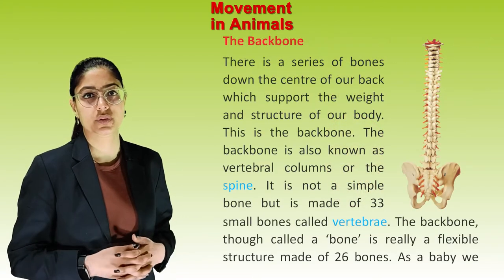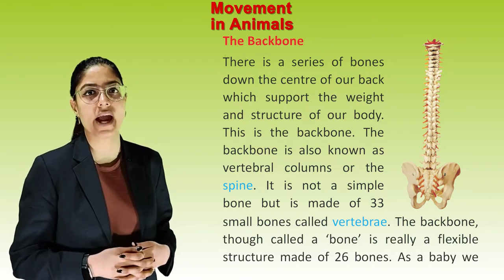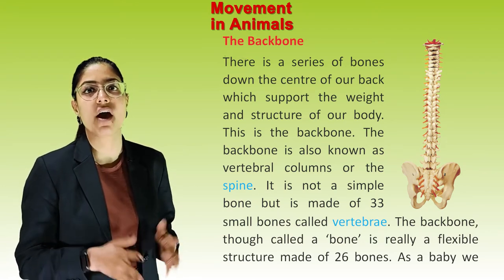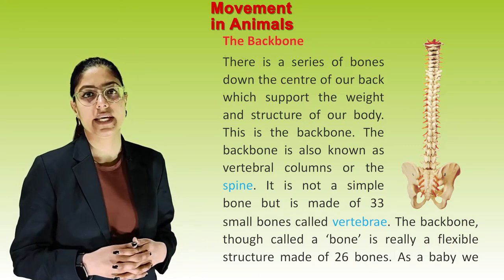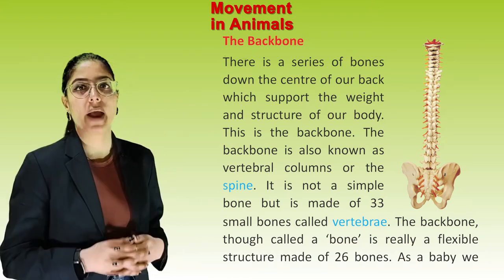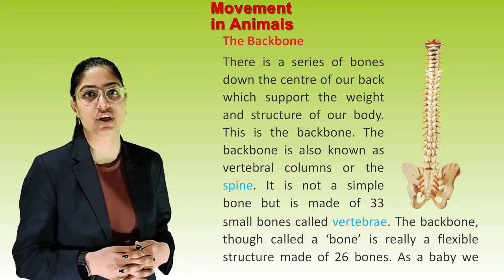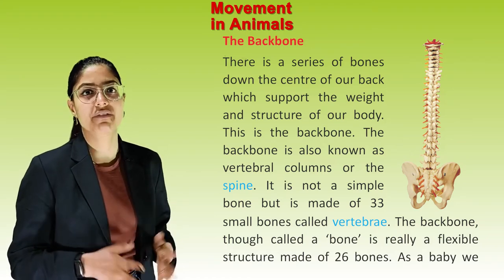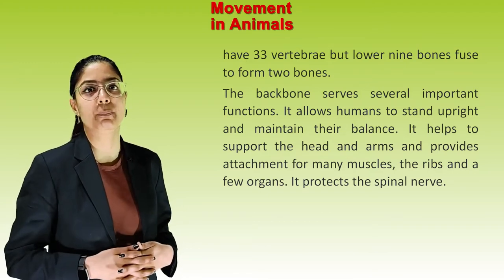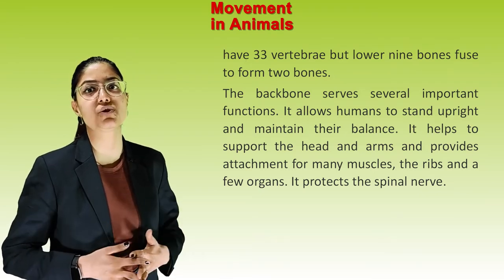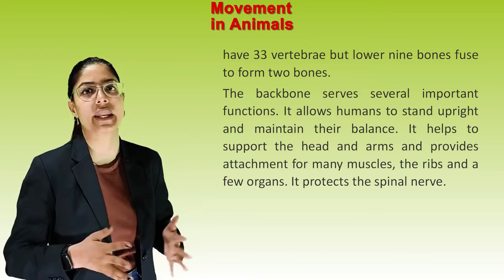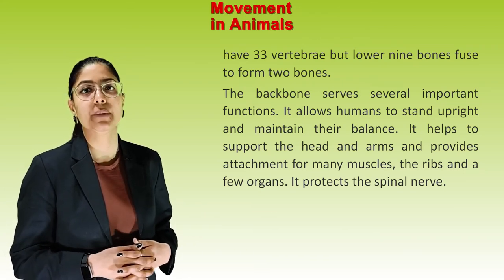The backbone. There is a series of bones down the center of our back that supports the weight and structure of our body — this is the backbone, also known as the vertebral column or spine. It is made up of 33 small bones called vertebrae; though commonly referred to as a bone, it is really a flexible structure. As babies we have 33 vertebrae, but the lower nine fuse to form two bones, leaving 26. The backbone allows humans to stand upright, maintain balance, support the head and arms, provide attachment for muscles, and protect the spinal nerve.